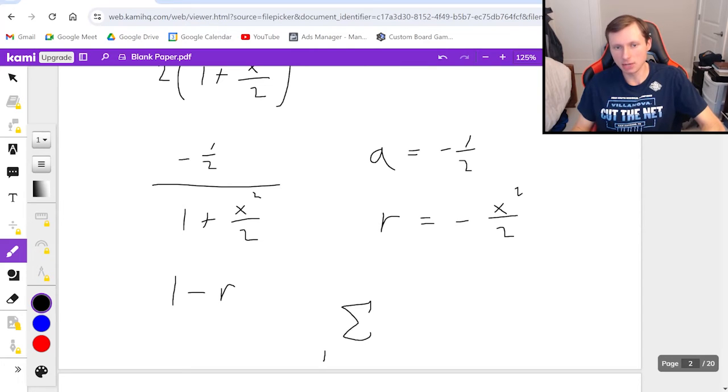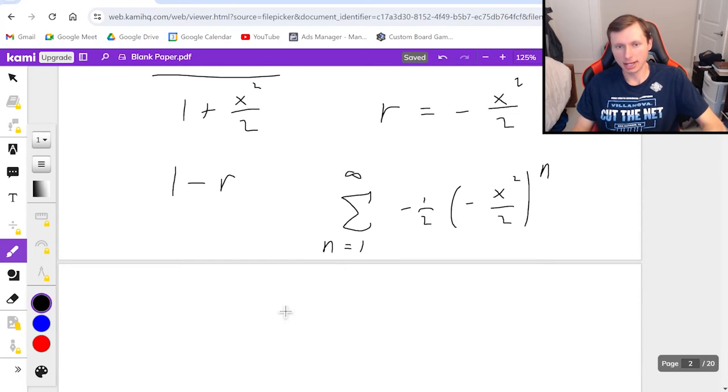If I want to write it as a series then, series from n equals 1 to infinity of negative 1 half times negative x squared over 2 to the nth power. And once I'm here, I get to say r is negative x squared over 2.